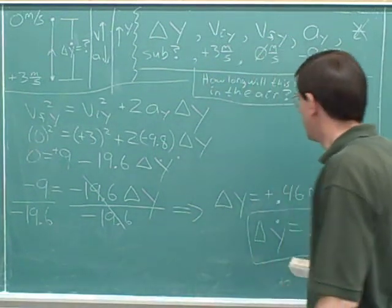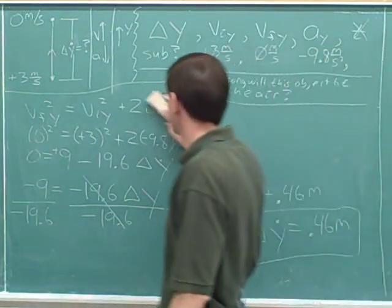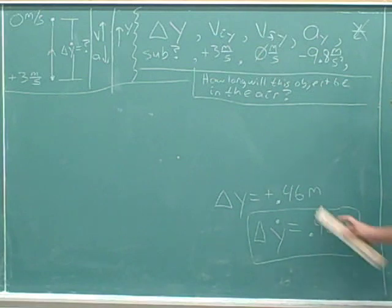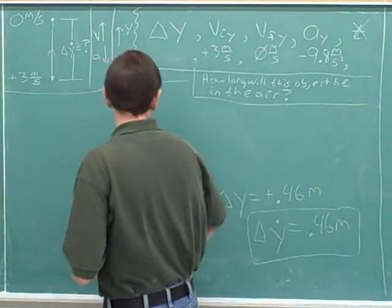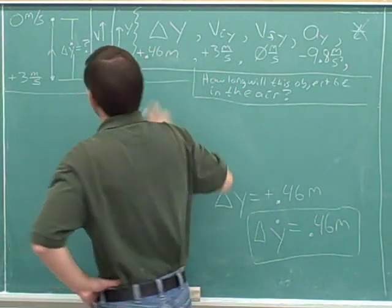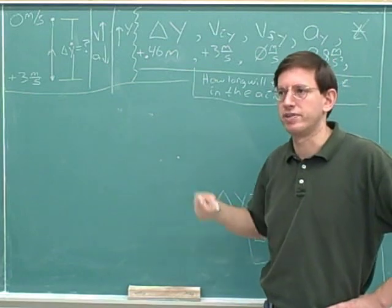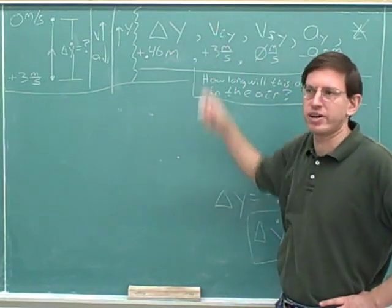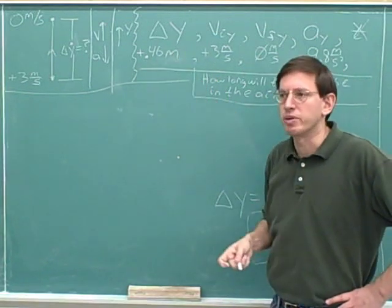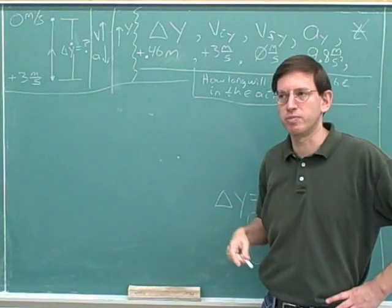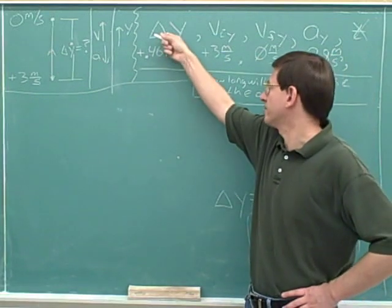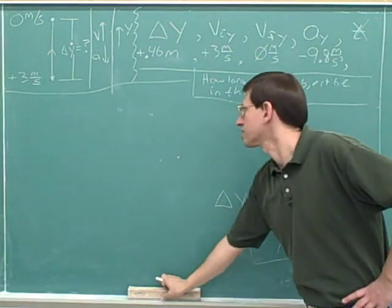I hope you paused the video and gave that a shot. We can erase a lot of our previous work here. Now we know the displacement is positive 0.46 meters, so I can write that in above. Even though the previous question was just about the magnitude of the displacement, when we're actually writing down the kinematics variables, we should always be writing down the full variable including the sign. Because when you work with the kinematics equations, you need to use the full variable including the sign. So our answer was just 0.46 meters to the previous question, but that displacement was still positive 0.46 meters.